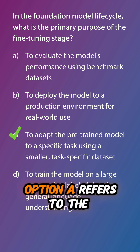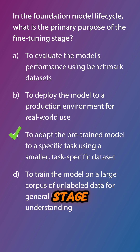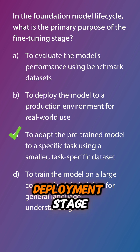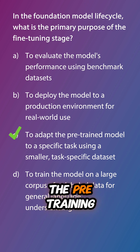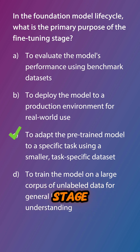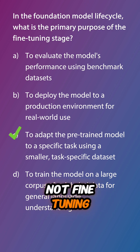Option A refers to the evaluation stage, option B describes the deployment stage, and option D describes the pre-training stage, not fine-tuning.